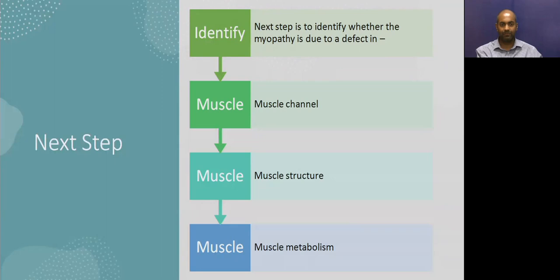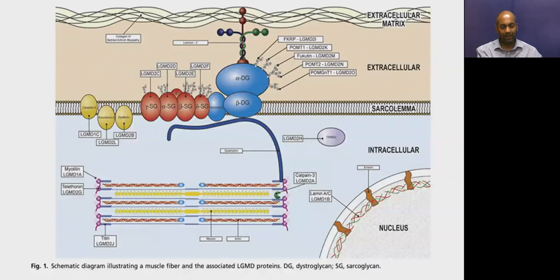This cartoon shows the structural proteins involved in the muscle — actin, myosin, and various other proteins. Disorders of muscle structure are named by their specific protein defects. For example, a defect in the dystrophin protein is known as a dystrophinopathy; a defect in the dysferlin protein is known as a dysferlinopathy, and so on.